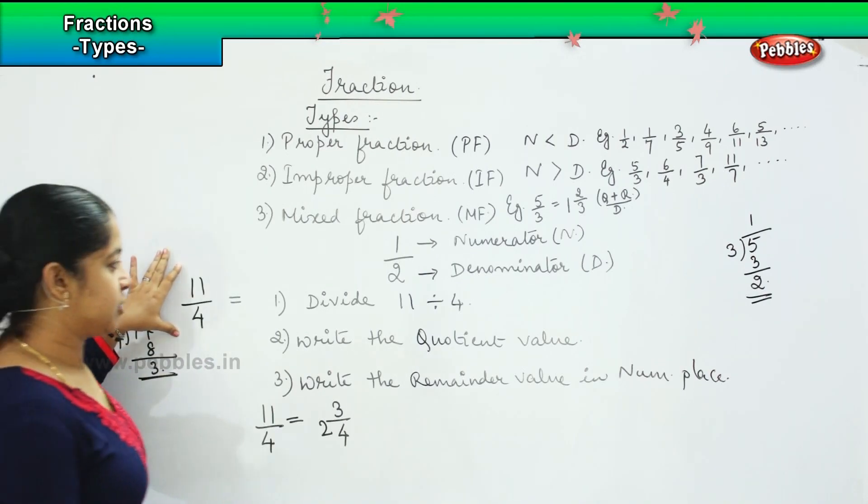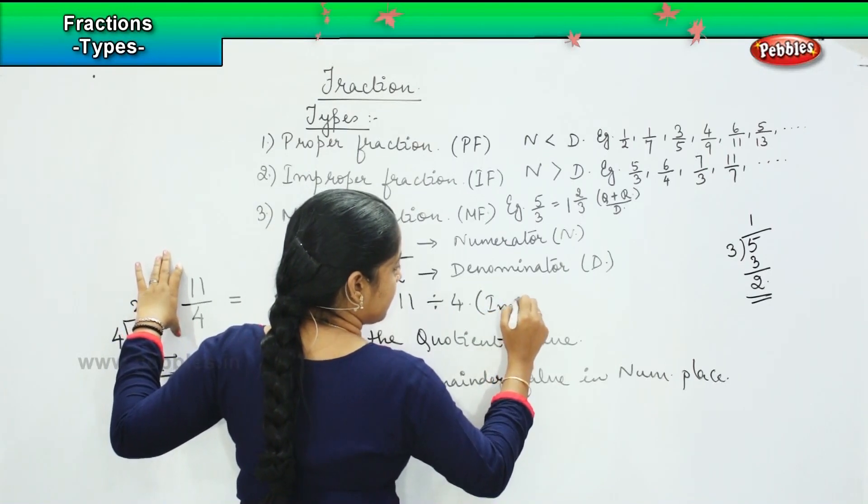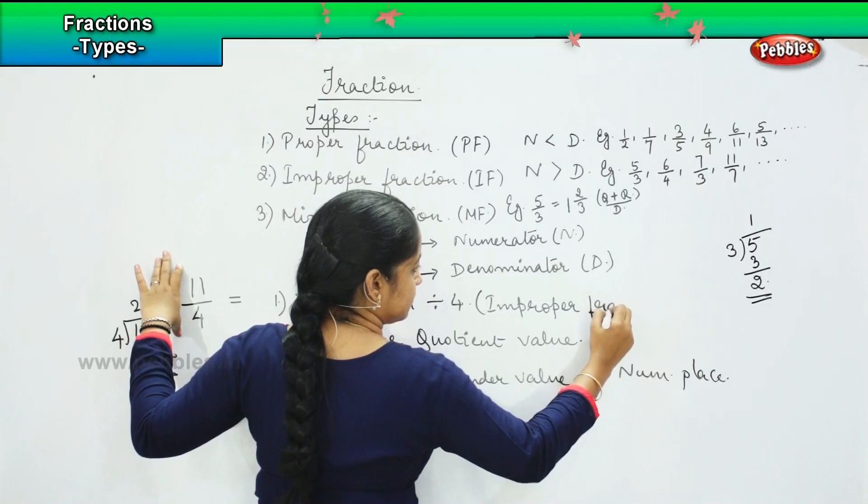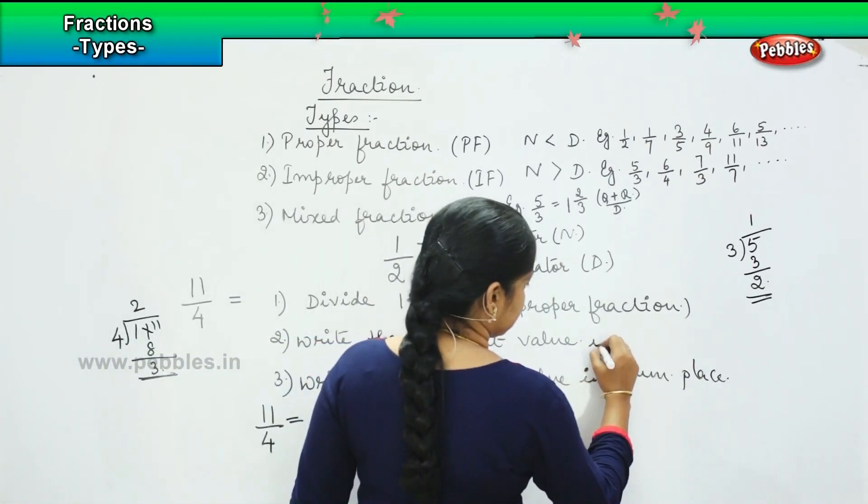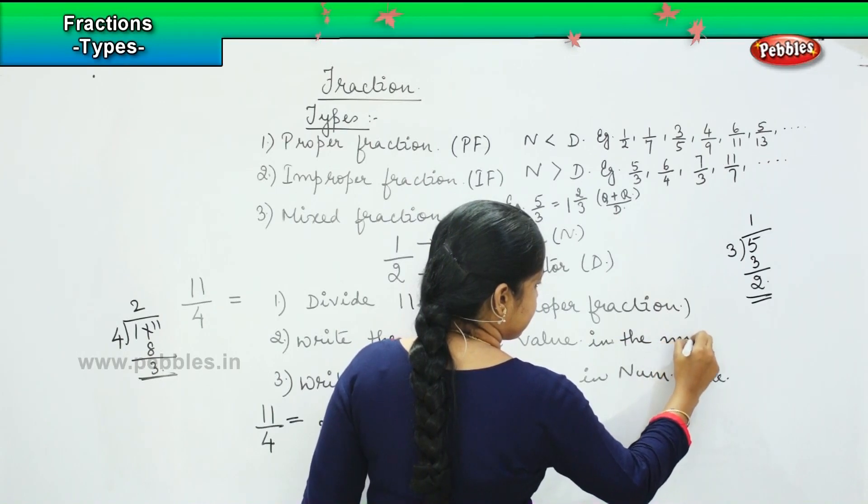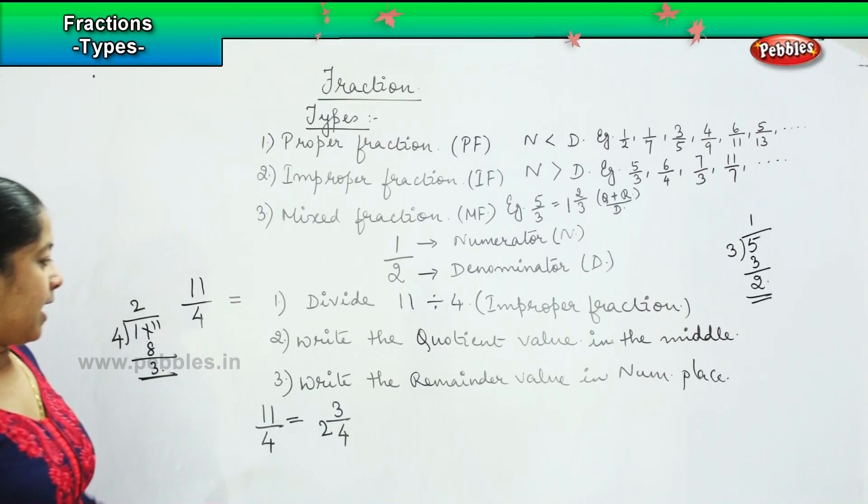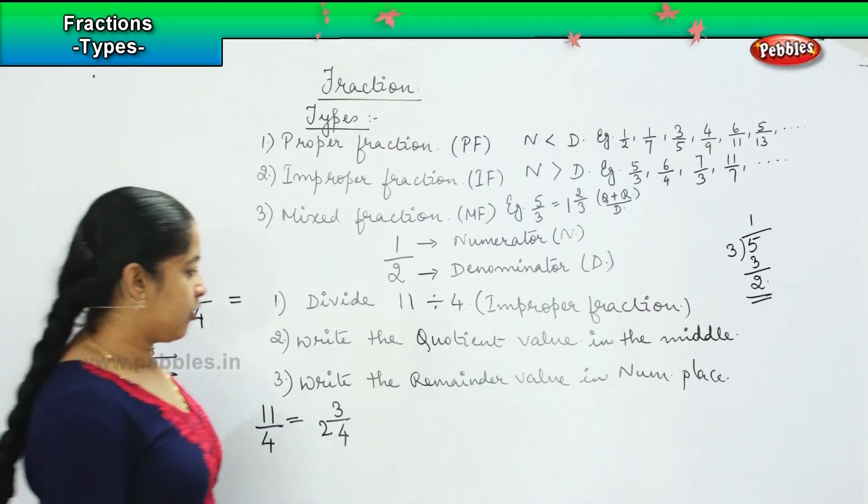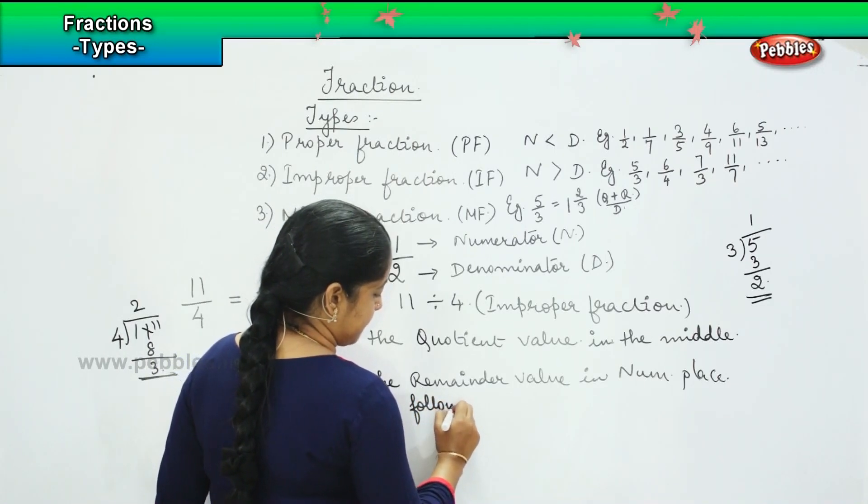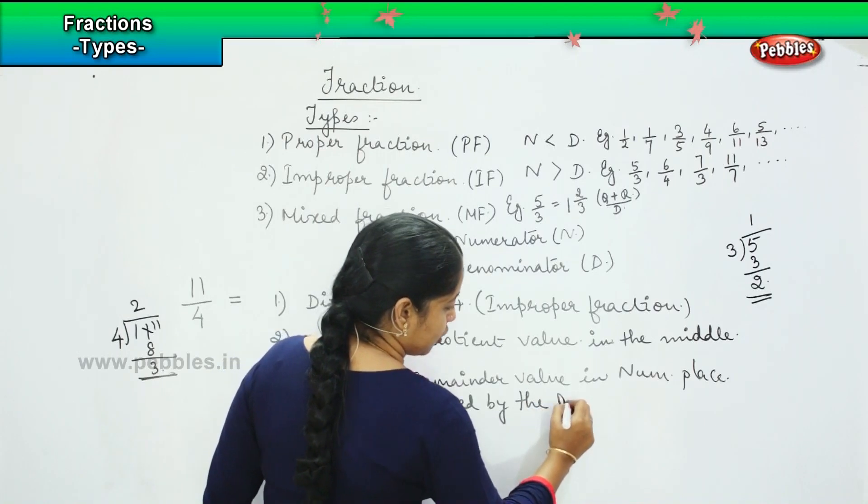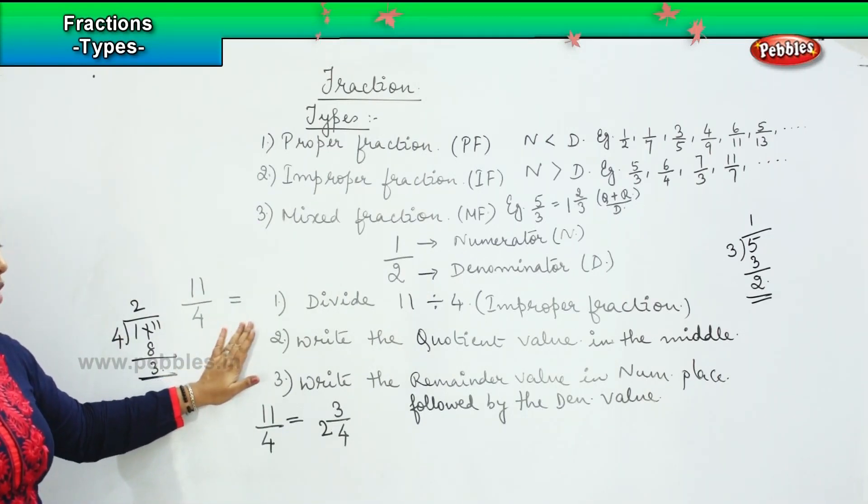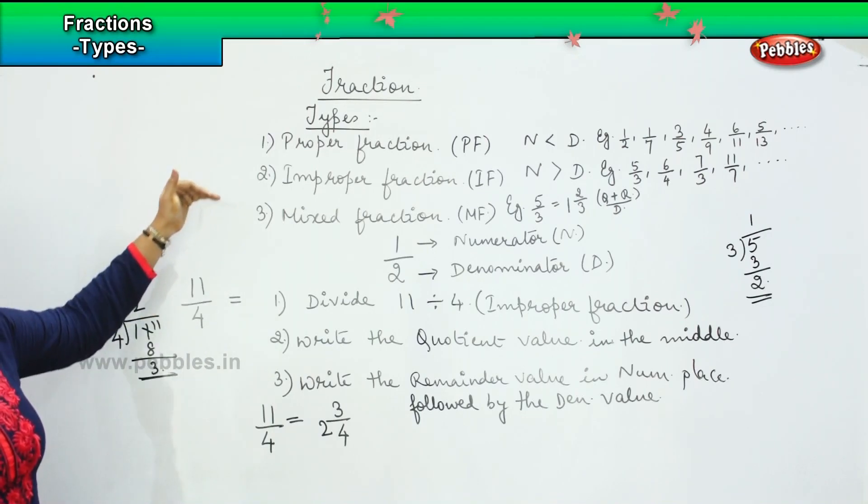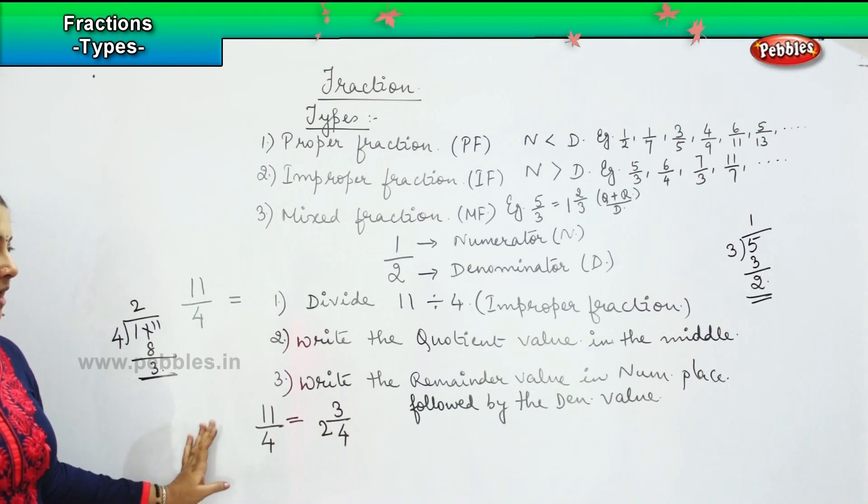So first I have divided this improper fraction. The next is write the quotient value in the middle, and then write the remainder value in the numerator place, followed by the denominator value. Clear, children? So this is how you will be making the improper fraction converted into a mixed fraction. So am I clear? We will be solving few examples in order to understand the concept better.